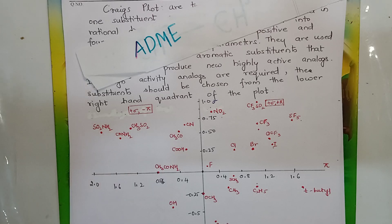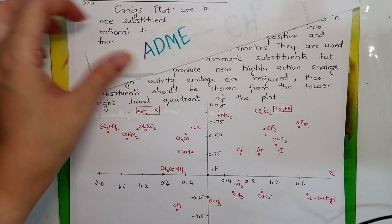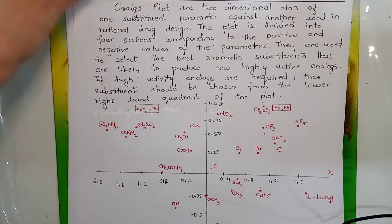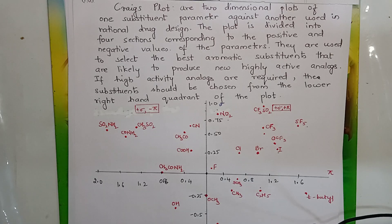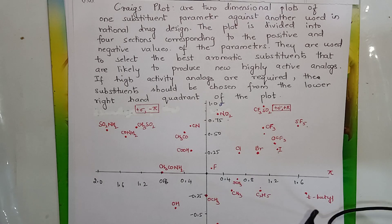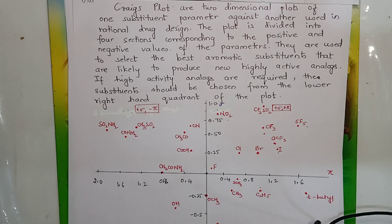Now, what is Craig's plot? These are two-dimensional plots of one substituent parameter against another, used in rational drug design.